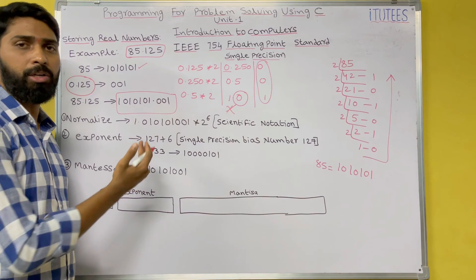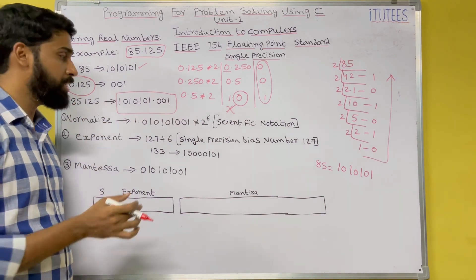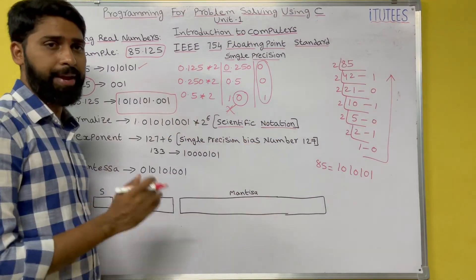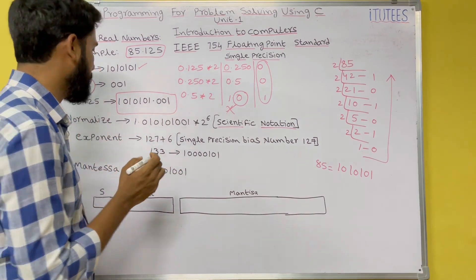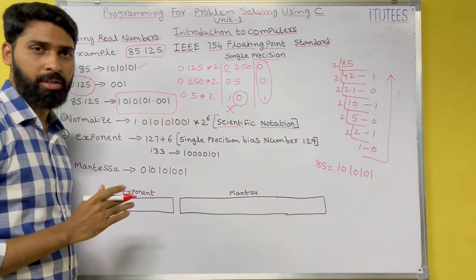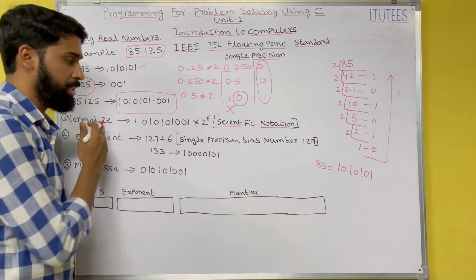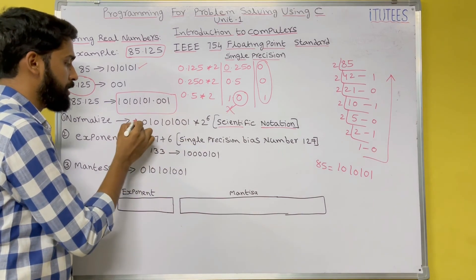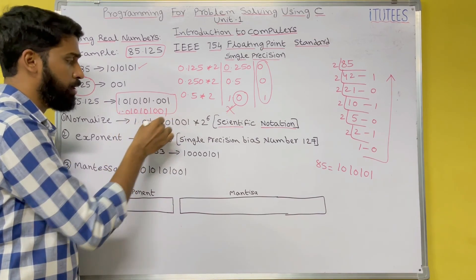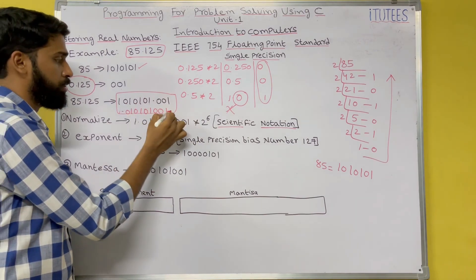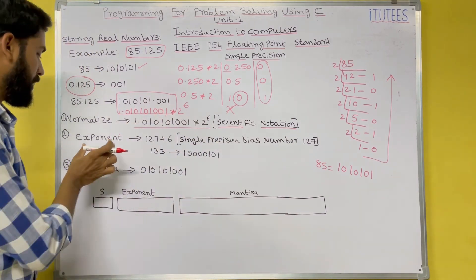So the combined binary number for 85.125 is 1010101.001. The next step is normalization — converting to scientific notation. As per the IEEE format, there should be only one digit to the left of the binary point. We normalize to 1.010101001, and since we moved the point 6 places to the left, we multiply by 2 to the power of 6.